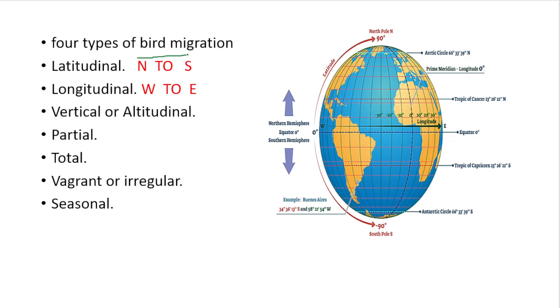Latitudinal Migration is the migration from North to South or South to North — that is, between the north and south latitudes.